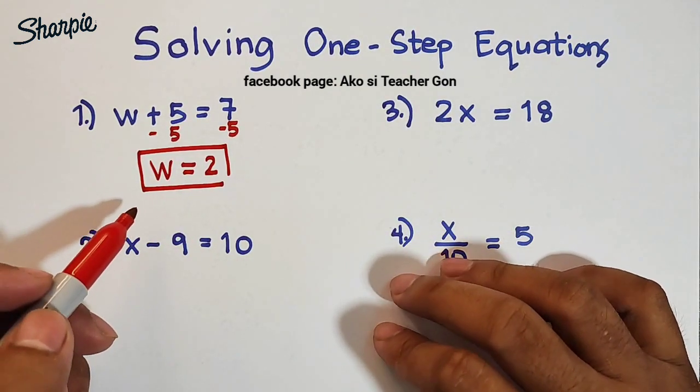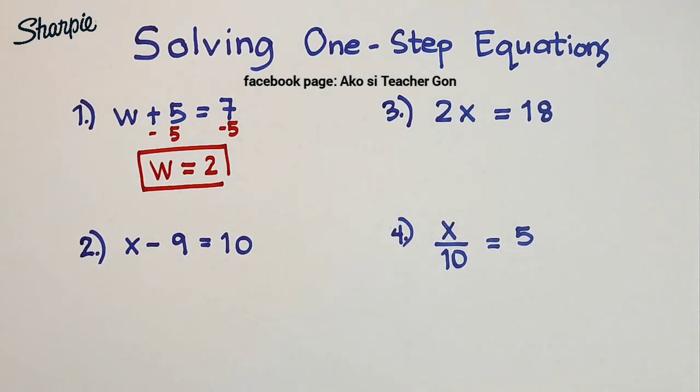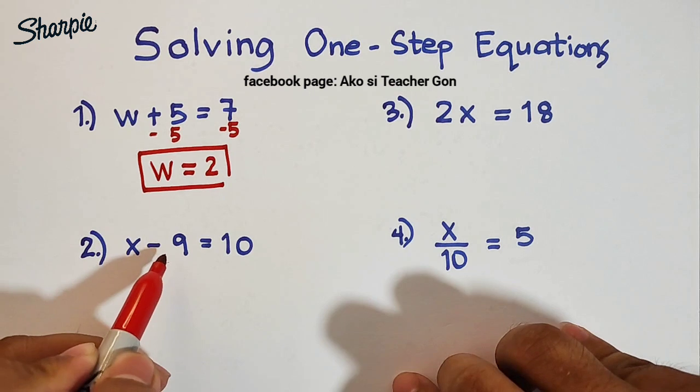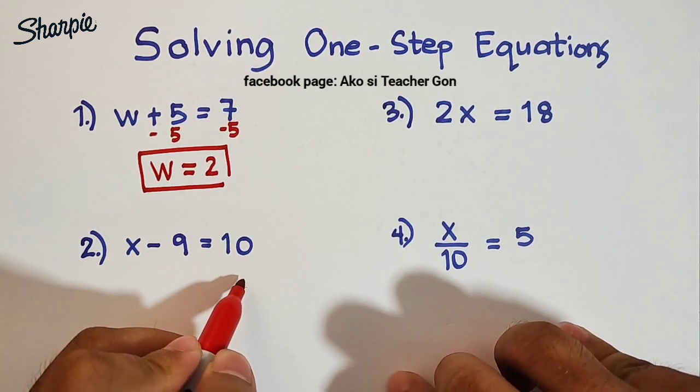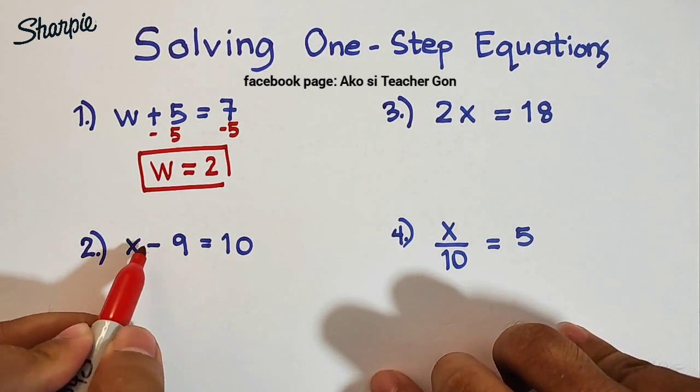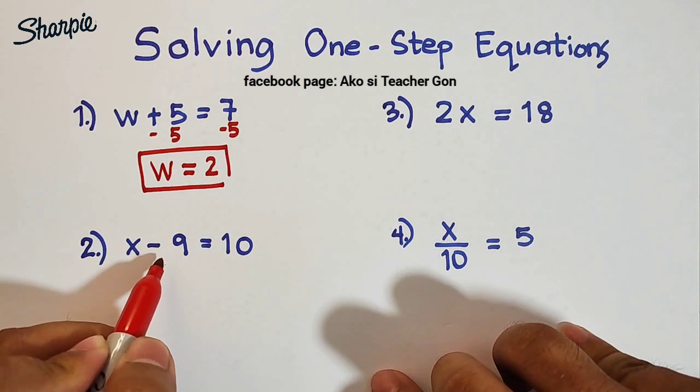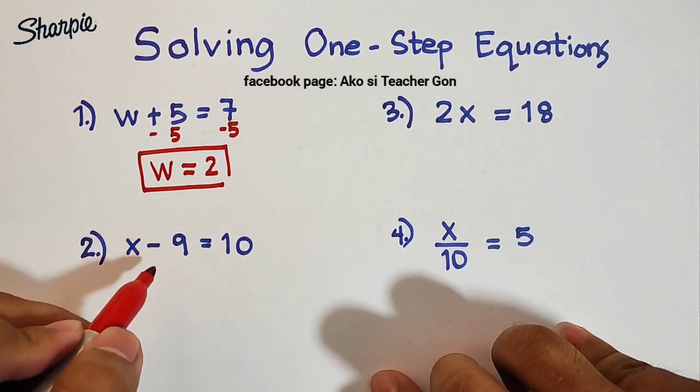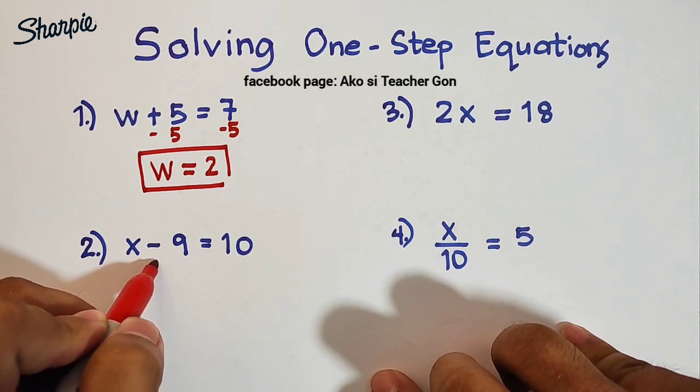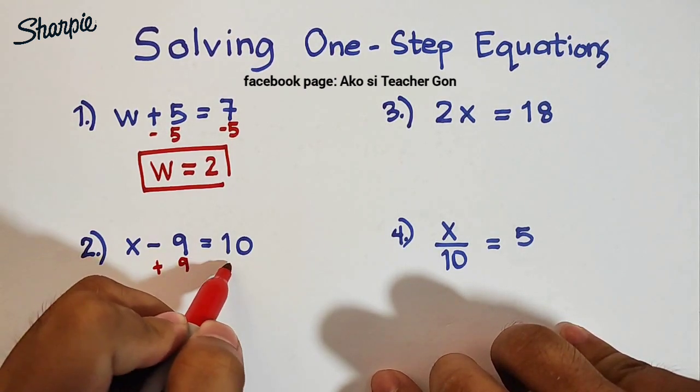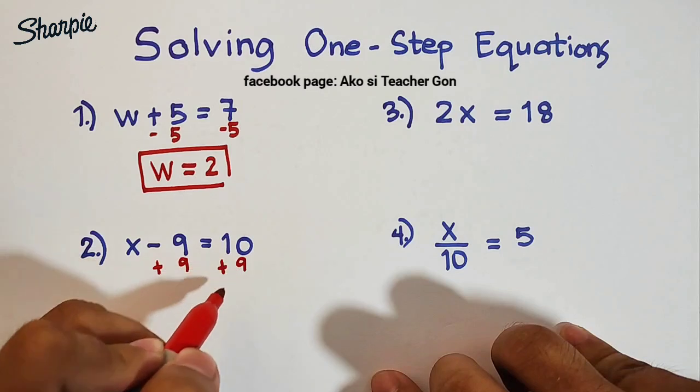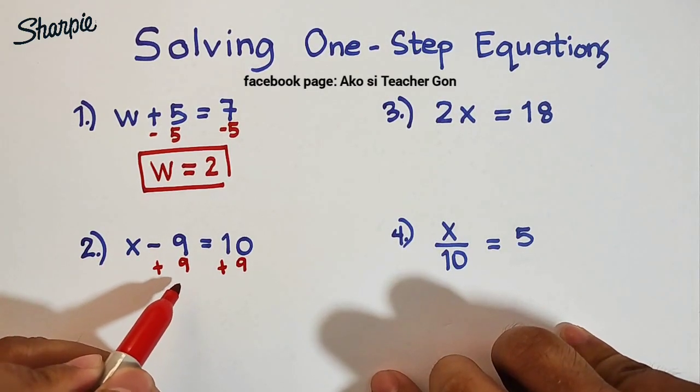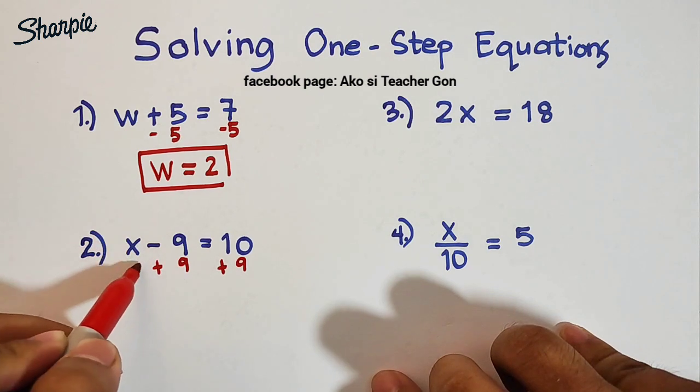Now let's move on with the second example. We are given x - 9 = 10. As you can see, this one is minus 9, so we need to get the inverse of negative 9, which is positive 9. So what we need to do is add 9 to both sides of the equation. We have here -9 + 9, which is definitely zero.